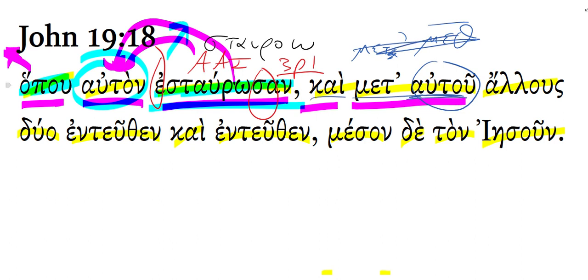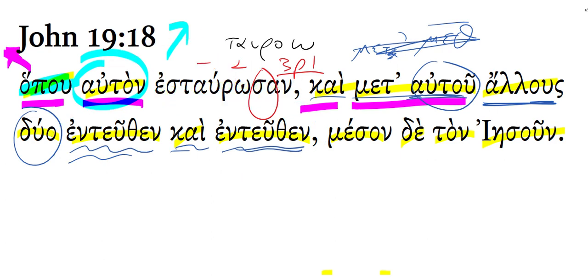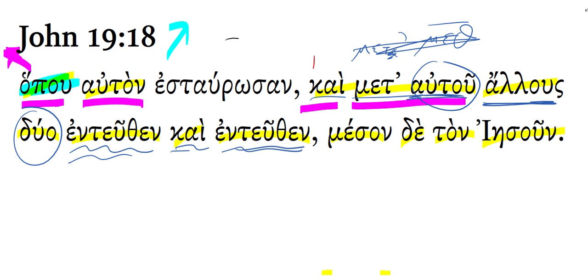And with him, two others. If we didn't have any context, we might translate 'from here and from here' or 'from here and from there.' But obviously in context it means one on either side — there were two others crucified with him, one on either side. And then there's this verb, 'they crucified,' right here.